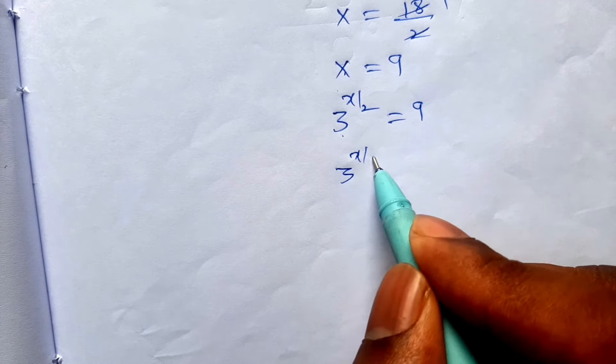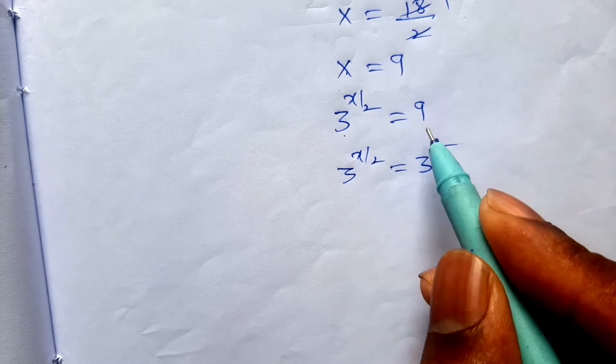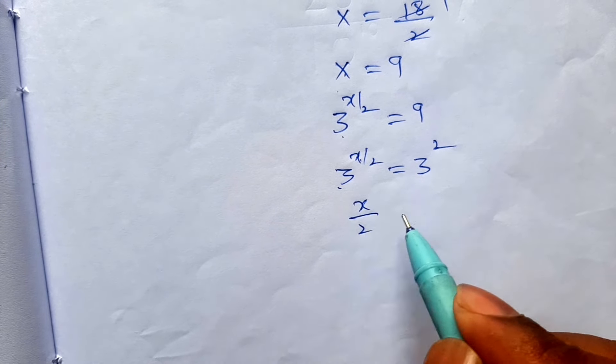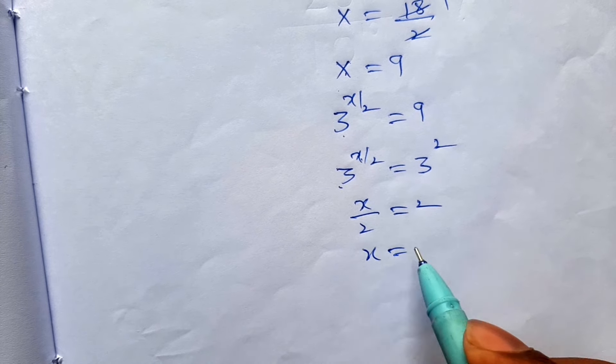3 to the power x by 2 is equal to 3 square. 9 it can be written as 3 square. Here bases are equal, so that powers also equal. x by 2 is equal to 2.